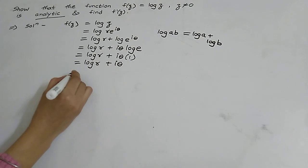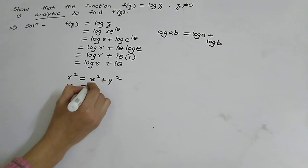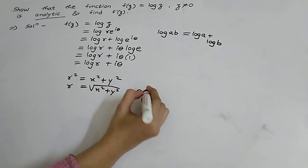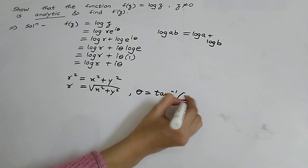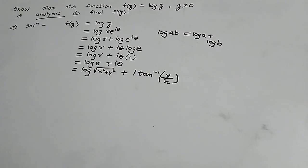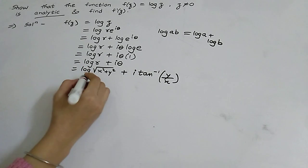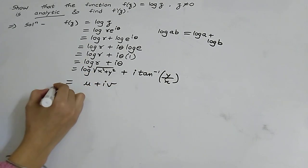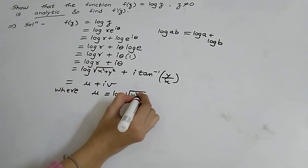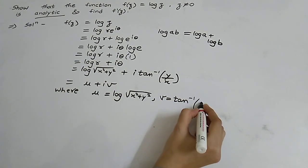Now we know that r² = x² + y², so r = √(x² + y²), and θ = tan⁻¹(y/x). Substituting both these values, we get the real and imaginary parts: u = log√(x² + y²) and v = tan⁻¹(y/x).